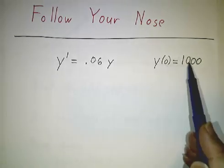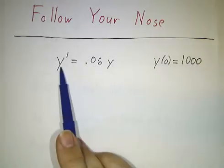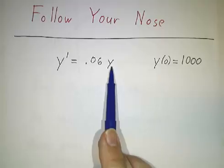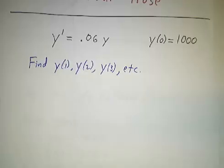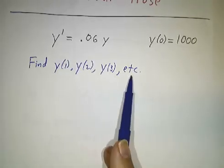And let's suppose you start off with a thousand dollars in the bank. It's paying six percent interest, so it's growing at a rate of six percent of whatever you've got there. And we want to know how much will you have a year from now? How much will you have two years from now? Three years from now? And so on.